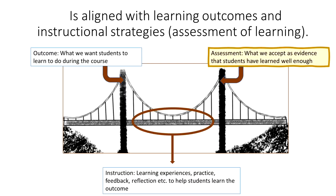The first principle is alignment, where an instructor starts with an intended type of learning — sometimes referred to as an outcome, objective, or competency — meaning what we want students to learn to do during the course. As soon as we clearly articulate what the course is about and what we want students to know and be able to do, we should ask ourselves: what would we actually accept as evidence that students have learned that well enough? We're thinking about a tool that distinguishes between students who learn with depth and breadth versus students who learn superficially.